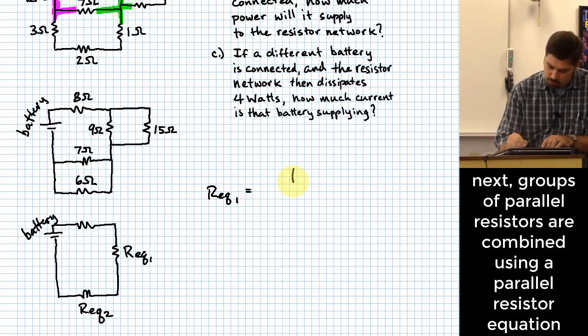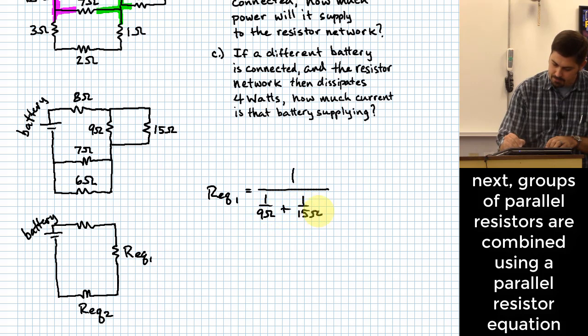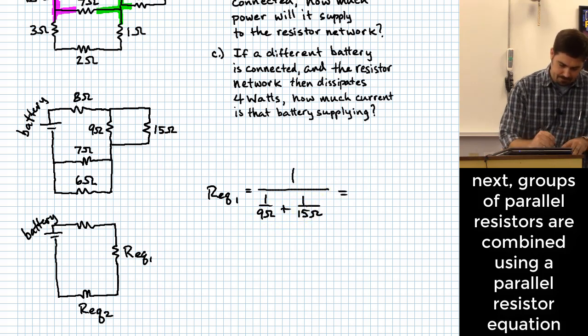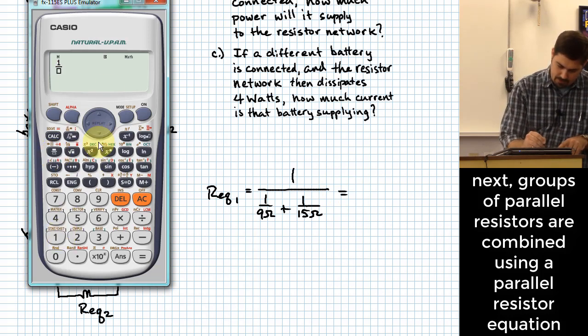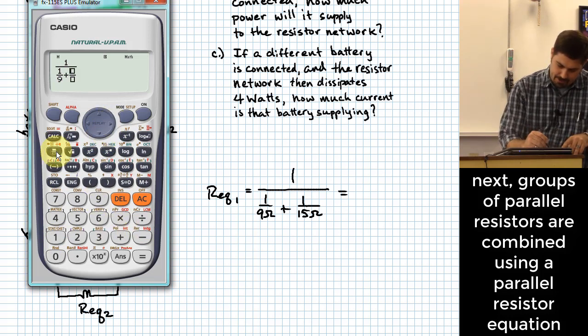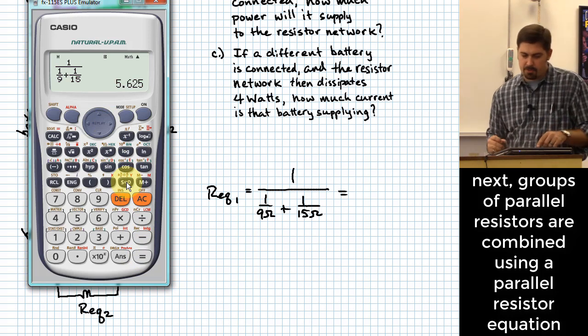All right, so REQ1, meaning equivalent resistance one, how do I compute that? It'll be one over what? One over nine ohms plus one over 15 ohms. So one over one over nine plus one over 15. All right, and that gives me 5.625.